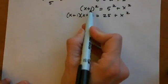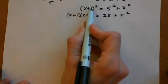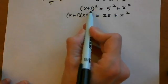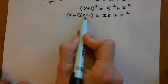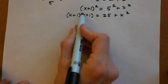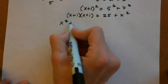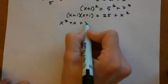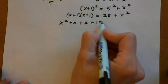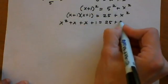When you square (x+1)², be careful not to just distribute the exponent. Anything squared is that thing times itself. We have to FOIL it out, which means we get a middle term: x² + x + x + 1 = 25 + x².